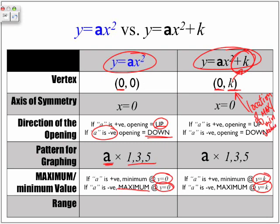And lastly, the range. If the parabola is opening up, we have a minimum, and the value is y is greater than and equal to 0. In terms of a being negative, the parabola goes down. If the parabola goes down, we have a maximum value, and the value of y is any number less than and equal to 0.